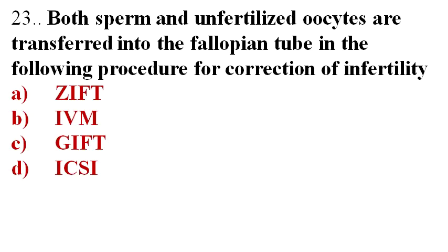Next question: Both sperm and unfertilized oocytes are transferred into the fallopian tube in the following procedure for correction of infertility. Options A. ZIFT, B. IVM, C. GIFT, D. ICSI.